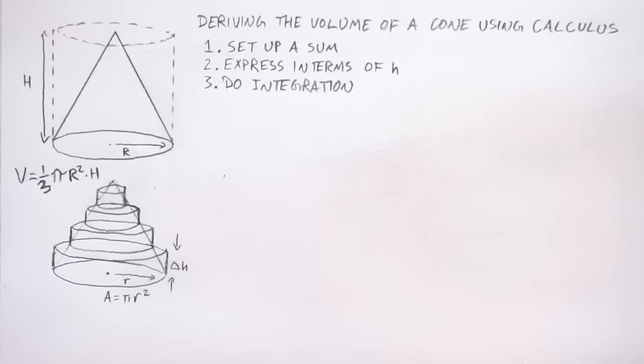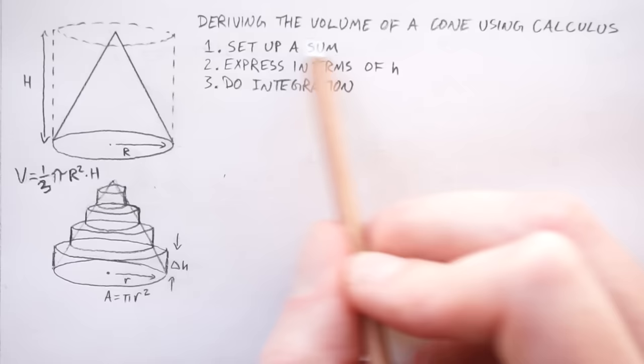So here are the three steps that we're going to do. First, set up a sum. Second, express the sum in terms of the height. And three, do the integration. Okay, so step one, setting up the sum.